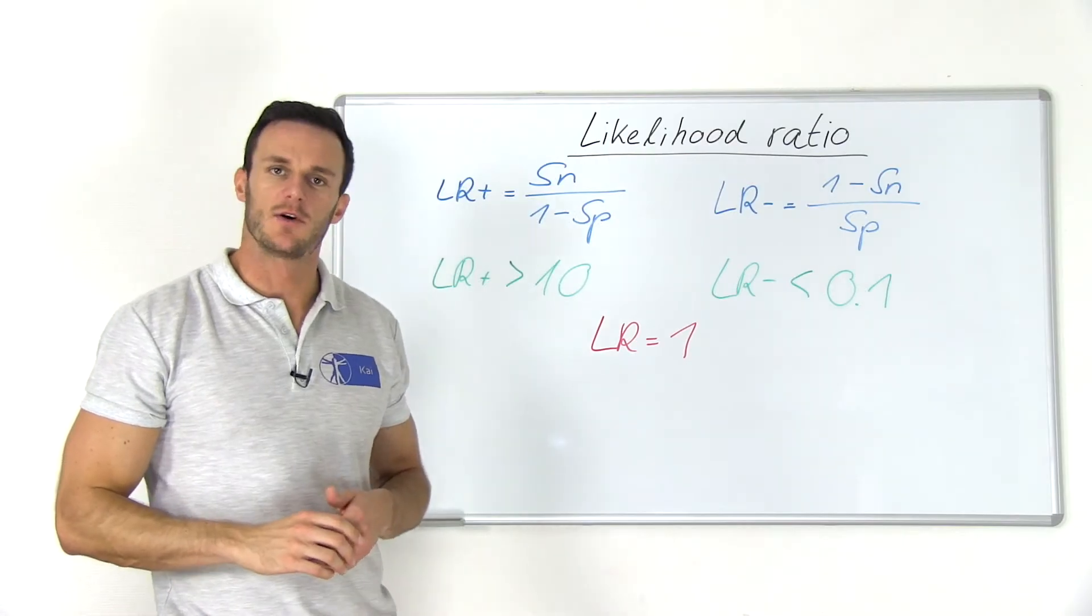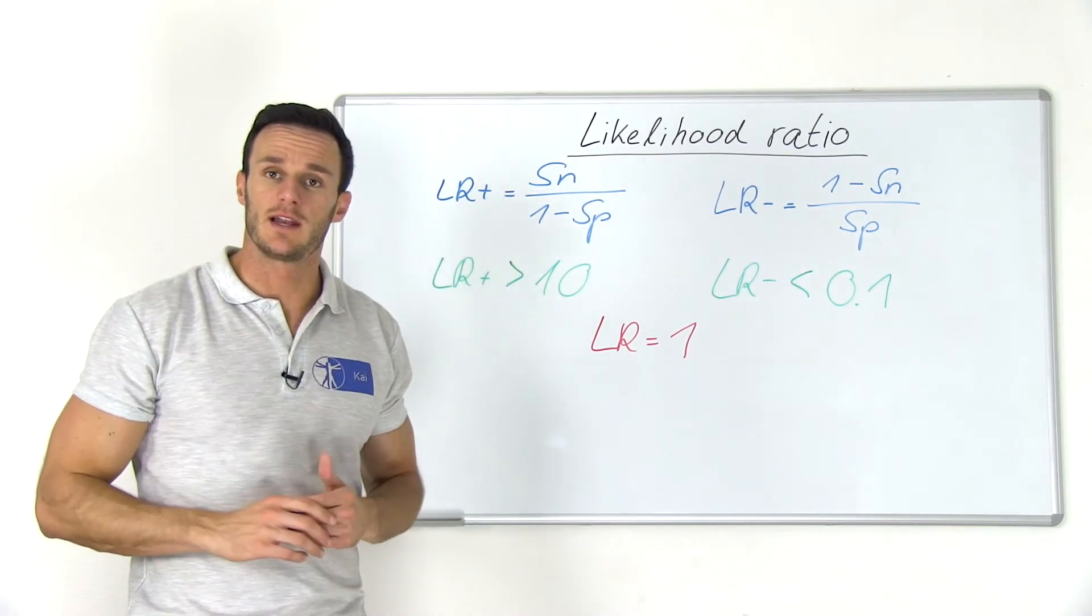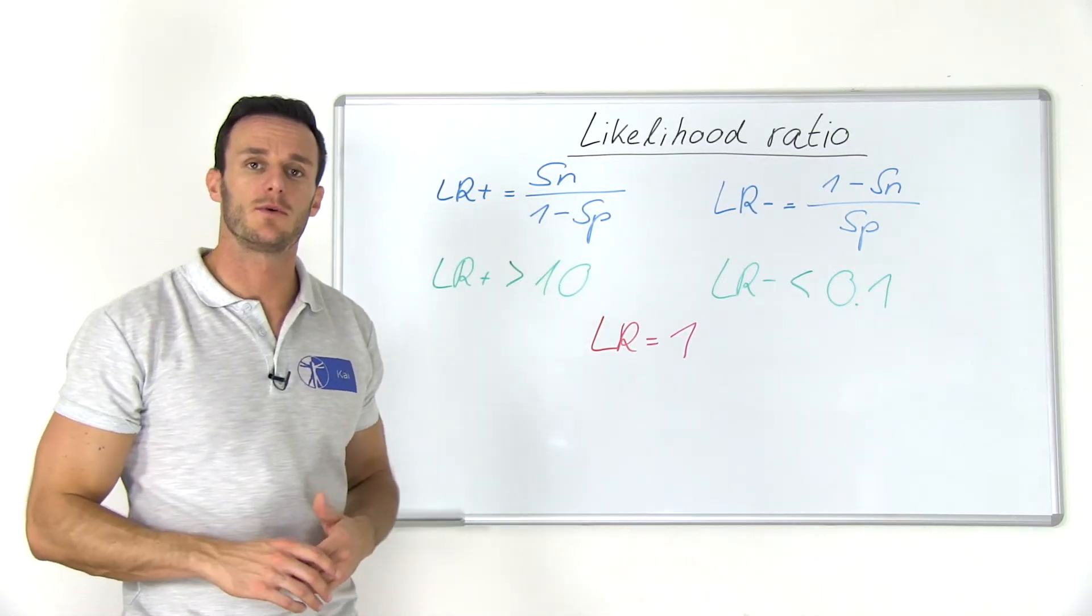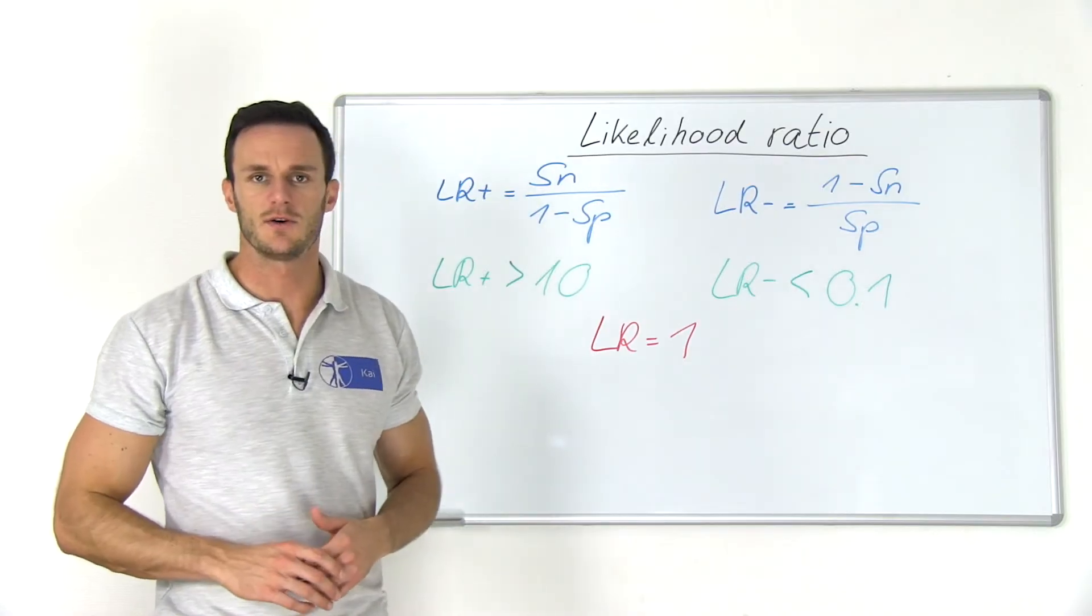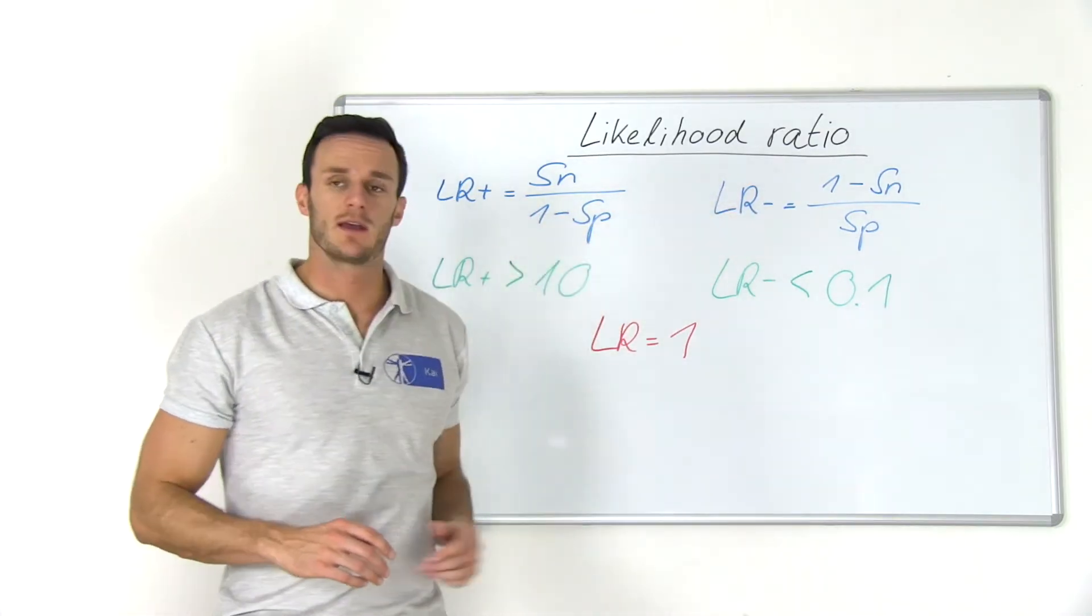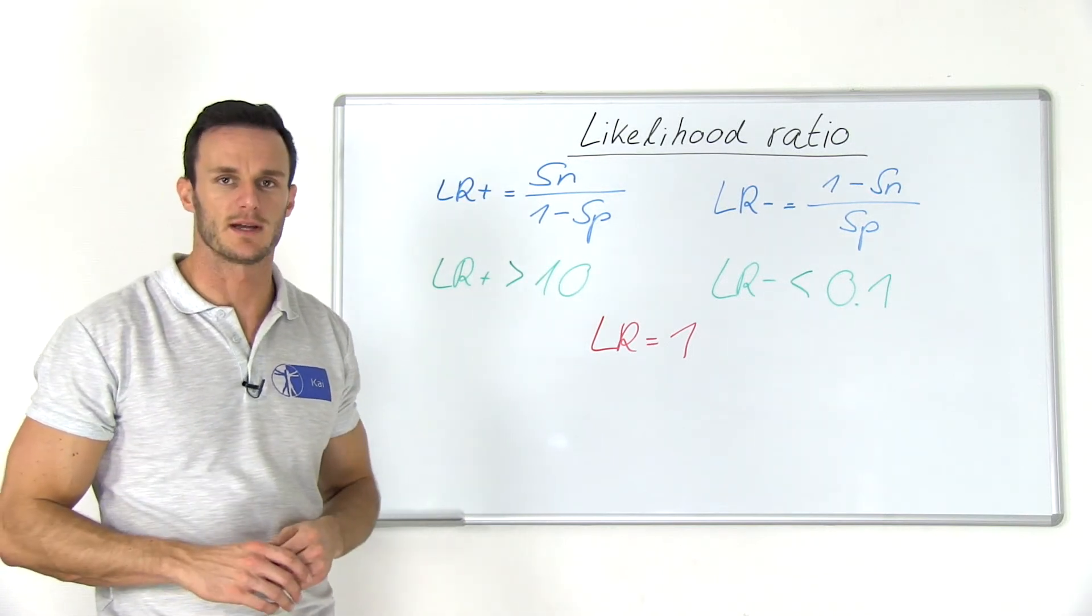The positive likelihood ratio, abbreviated as LR+, can be calculated by dividing sensitivity through 1 minus specificity and the negative likelihood ratio, abbreviated as LR-, can be calculated using 1 minus sensitivity through specificity.